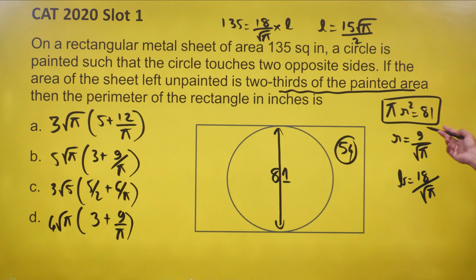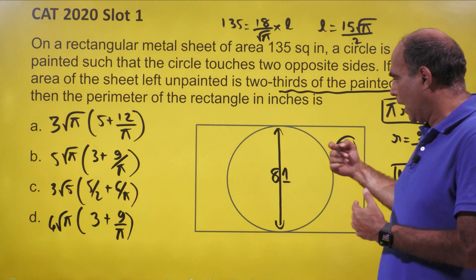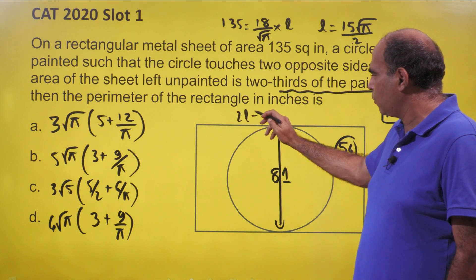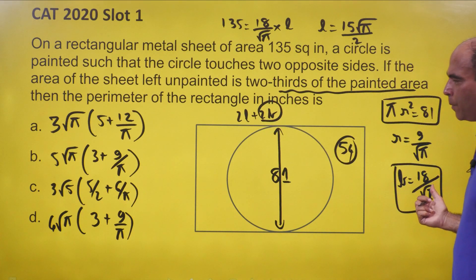r² is 81 by π, so r is 9 by root π. So the breadth of this rectangle is double of the radius, 18 by root π, which means that when I add the breadth twice, the perimeter is 2l plus 2b. So when I add the breadth twice, it's going to be 36 by root π.